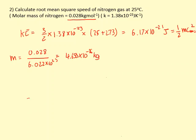Now I can put it back into this equation, so I'm going to rearrange it first. I'm going to do 2 times 6.17 times 10 to the minus 21 and then divide that by the mass of the particle.